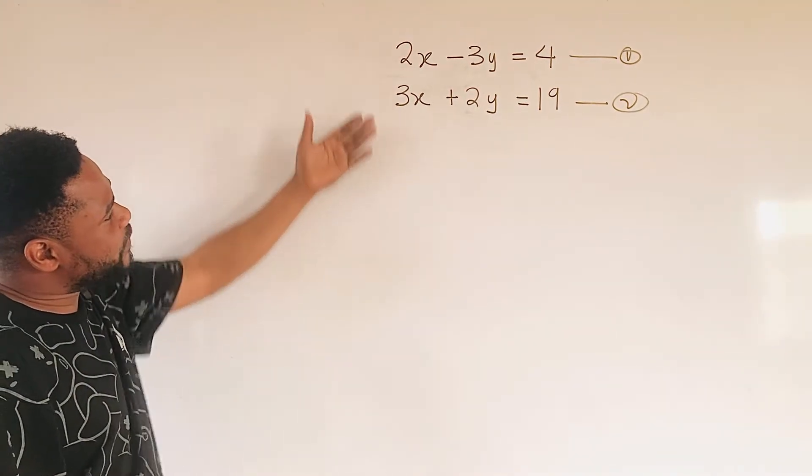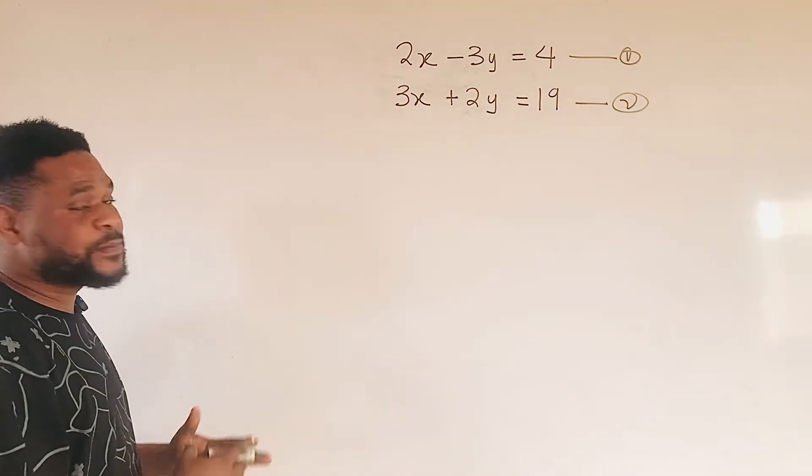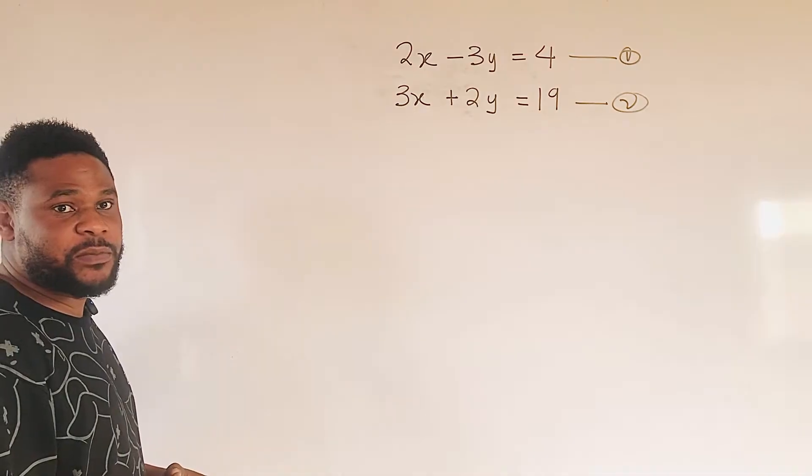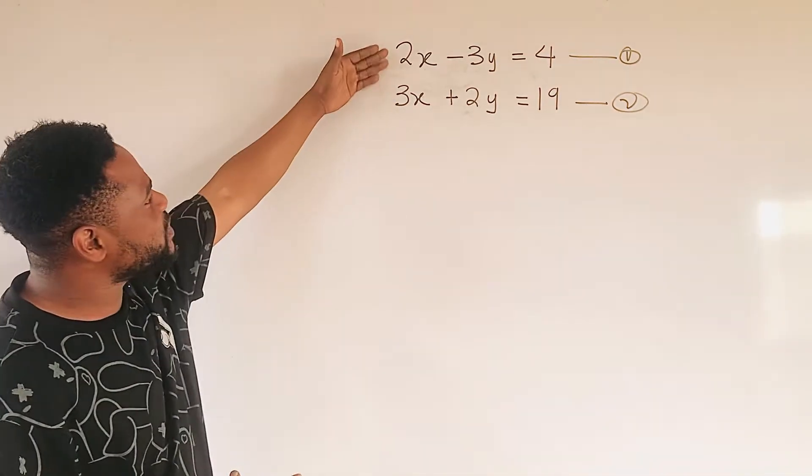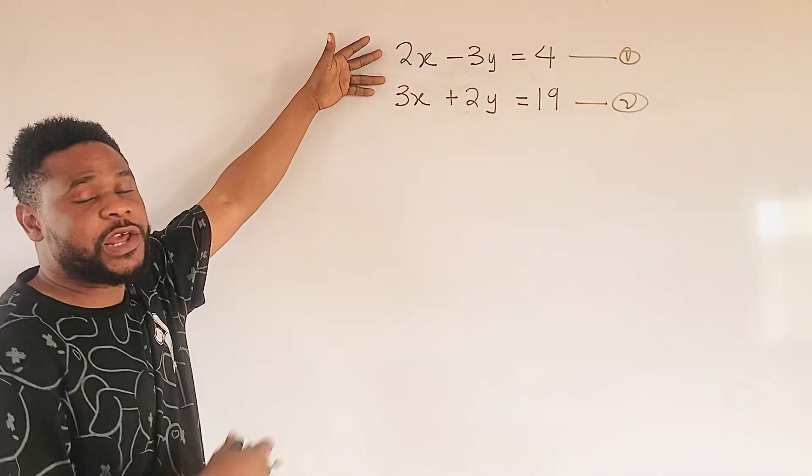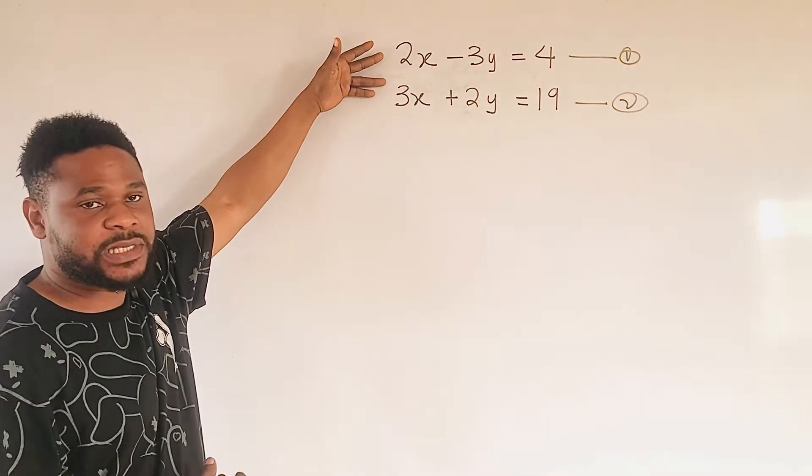We want to look at how we can solve this simultaneous equation using substitution method. With the substitution method principle, we choose any of the variables in any of the equations, then we make it the subject.